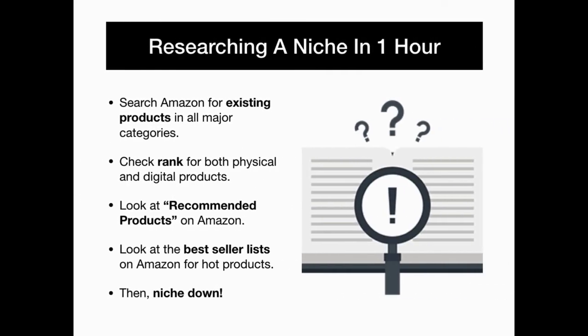Quick and easy niche research methods: research a niche in under one hour. Start by searching Amazon for existing products in all of the major categories. Check the rank for both physical and digital products. Then look at the recommended products on Amazon to uncover additional products worth promoting. And look at the best-selling lists on Amazon for hot trending products.